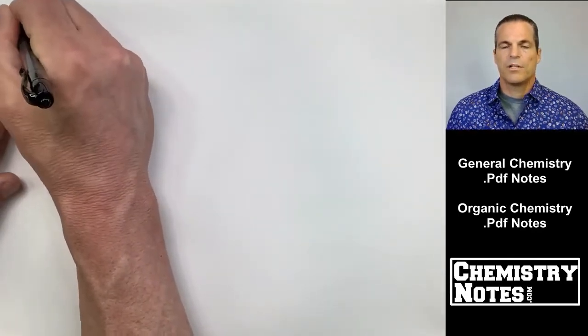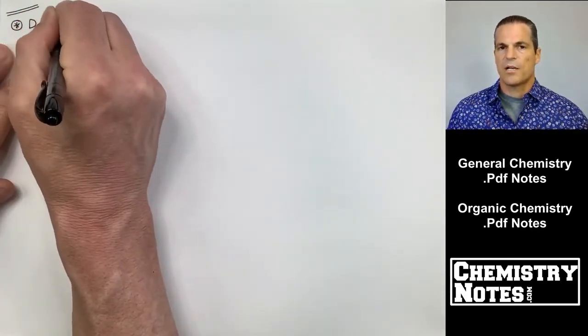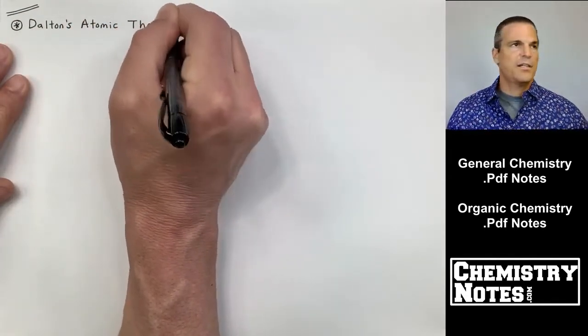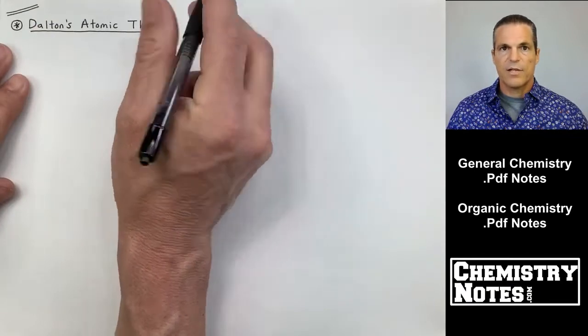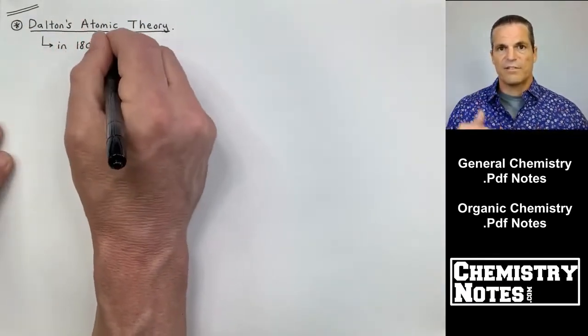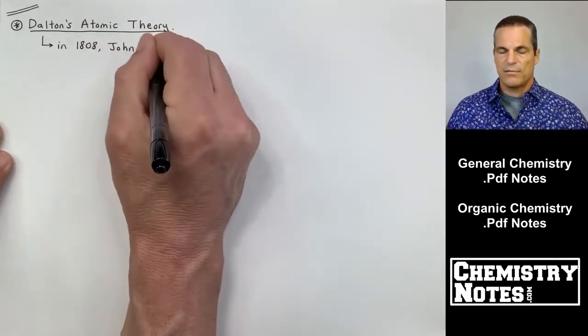So now, I spoke a little bit earlier about this, but now I want to talk about Dalton's atomic theory. He's got five postulates or five statements. He did this a long time ago, and only two of those five statements need to be corrected slightly.